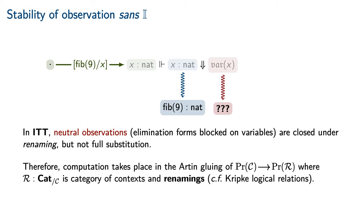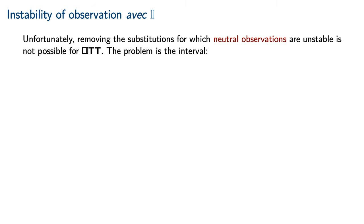Therefore, in each computational situation, one isolates a category of contexts and substitutions under which those observations are closed. In this case, that is the category of contexts and renamings. Then, computation occurs in the Artin gluing of the base change functor induced by the structural map from contexts and renamings into contexts and substitutions. This arrangement is sometimes referred to as Kripke logical relations, or Kripke relations of varying arity.